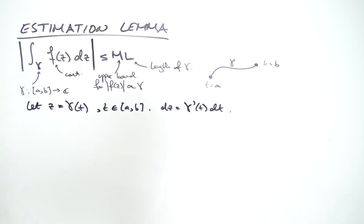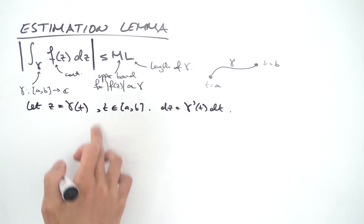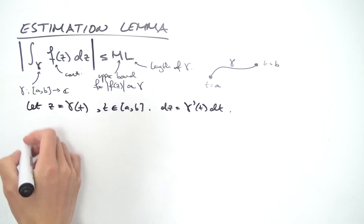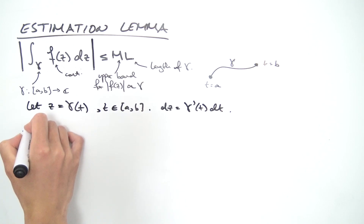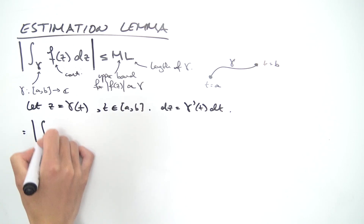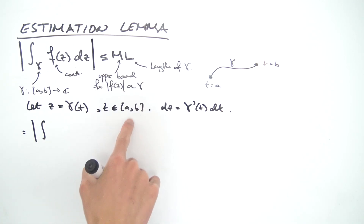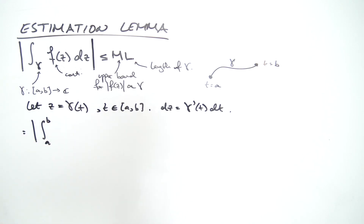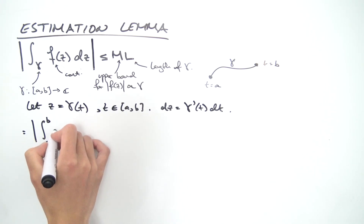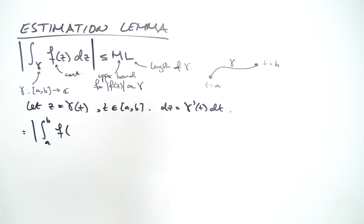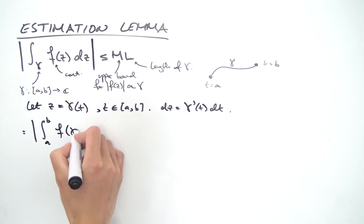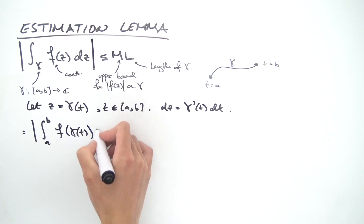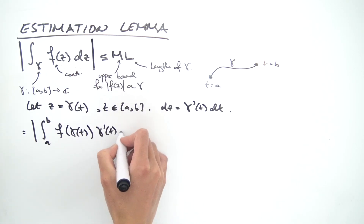Now let's plug everything into the integral. The integral over gamma becomes the absolute value of the integral from a to b of f(gamma(t)) times gamma'(t) dt, switching our variable over to t.